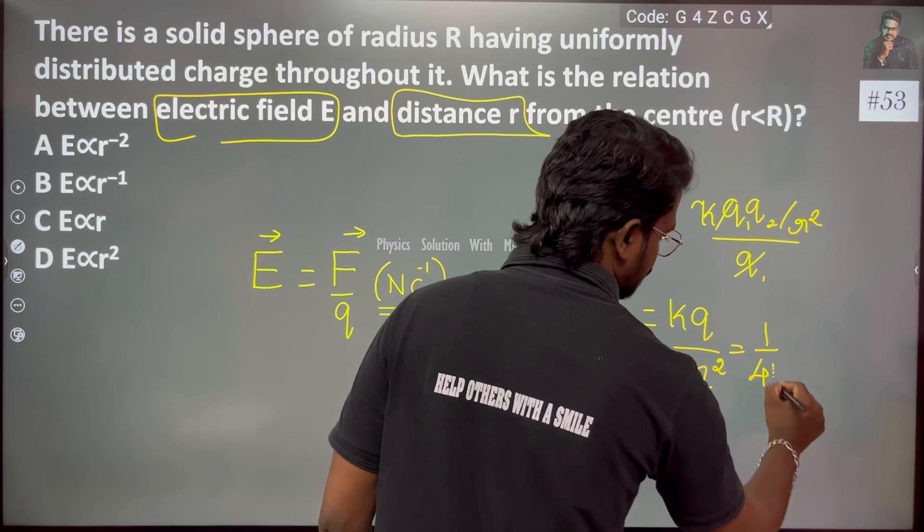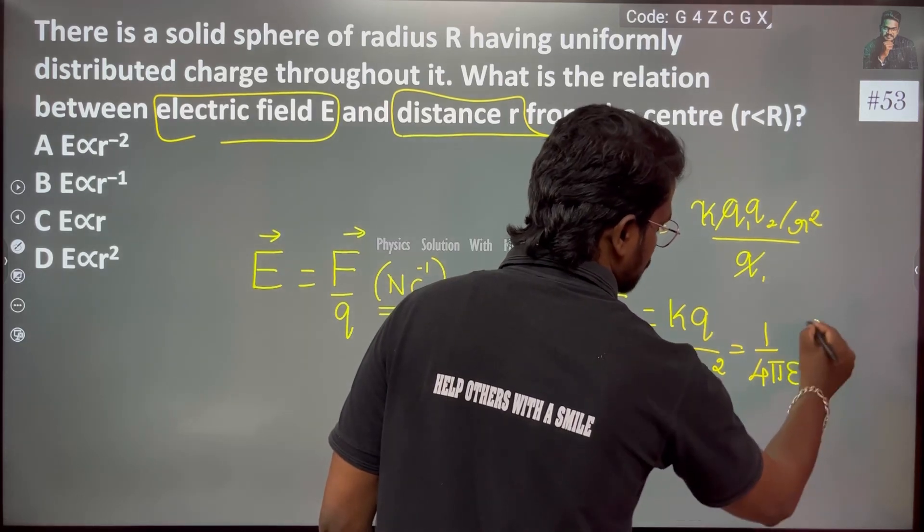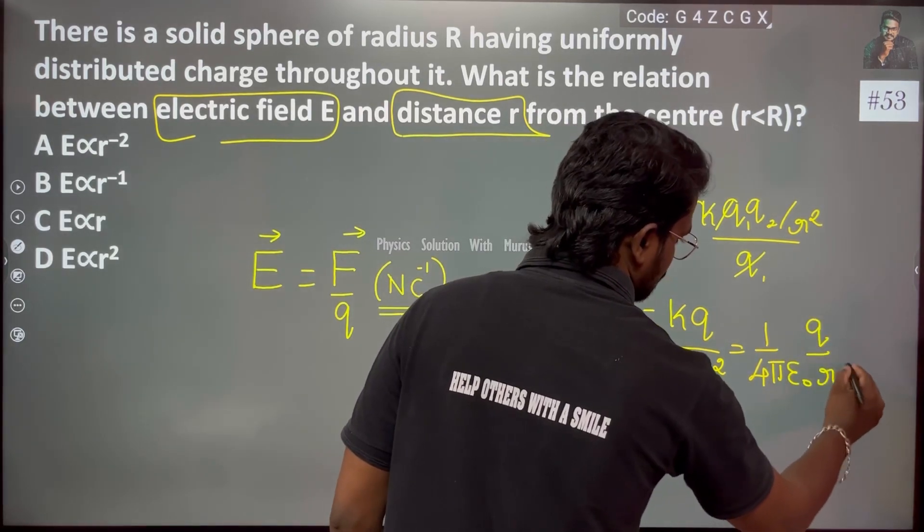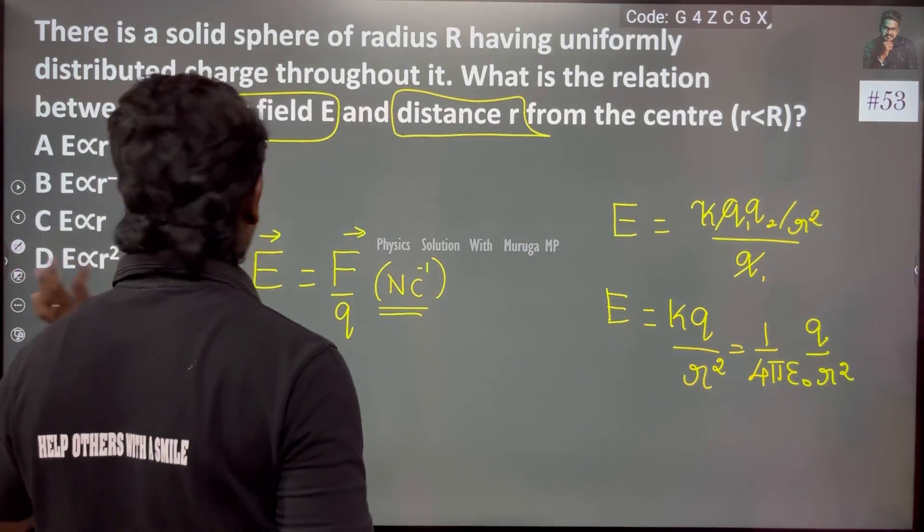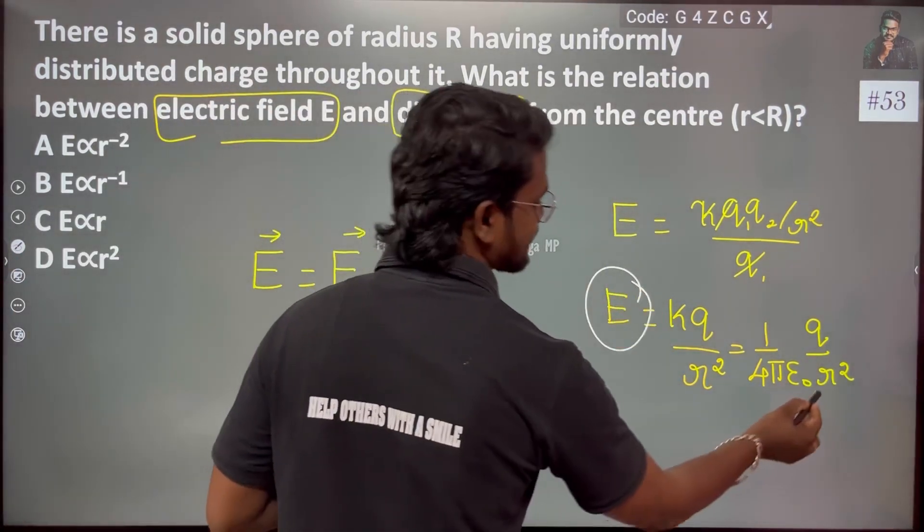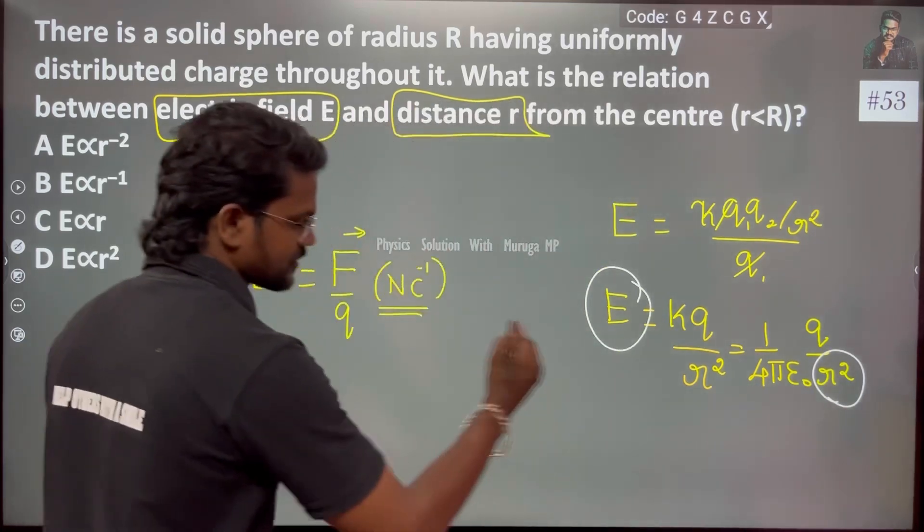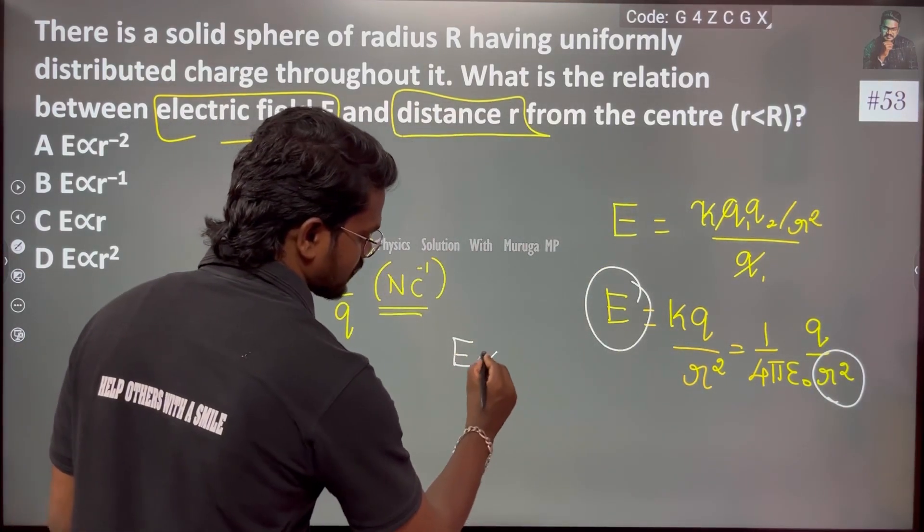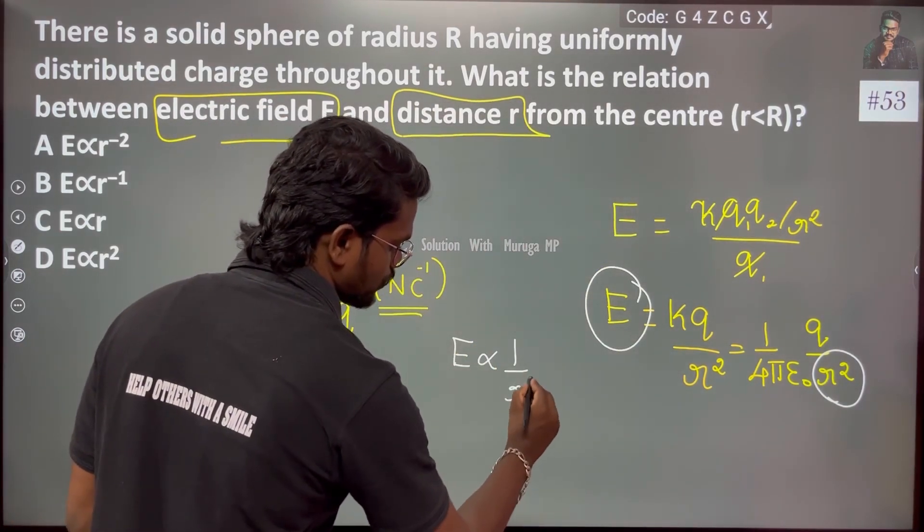One by 4 pi epsilon naught q by r square. So for electric field and distance, the relation is very clear: electric field is inversely proportional to the square of the distance between them.